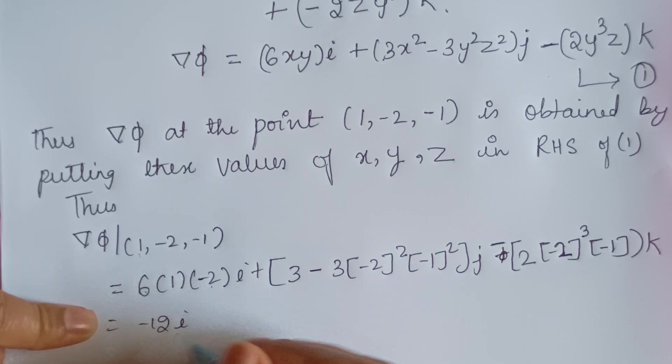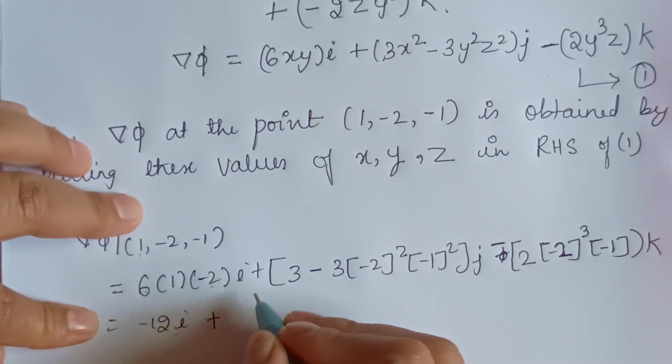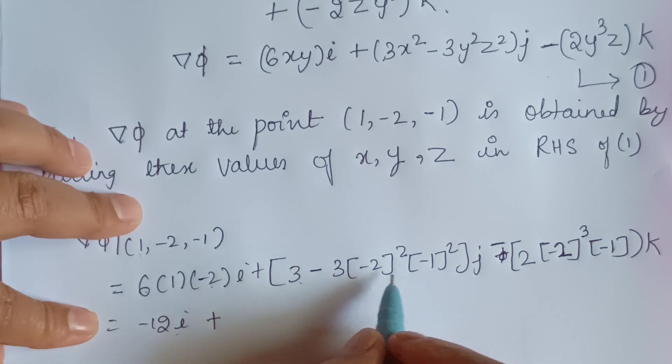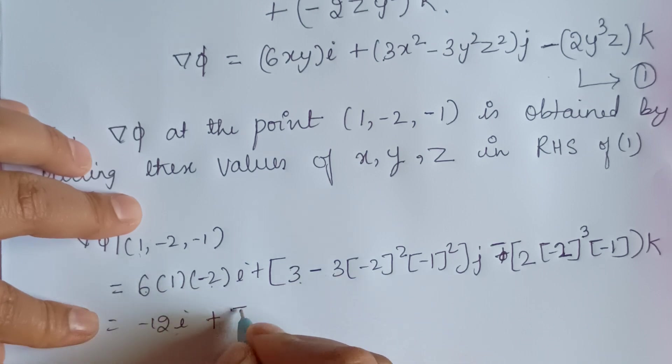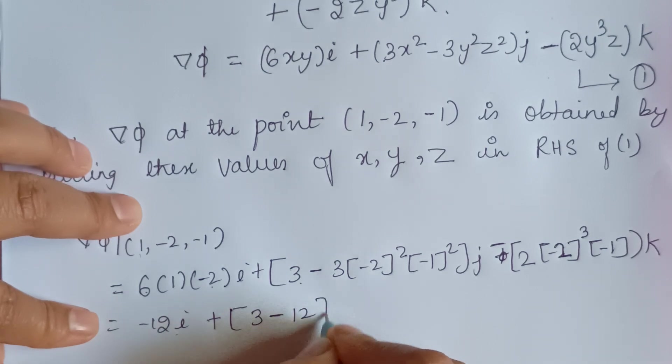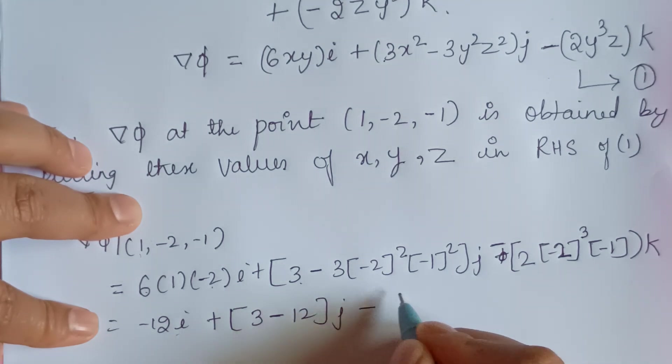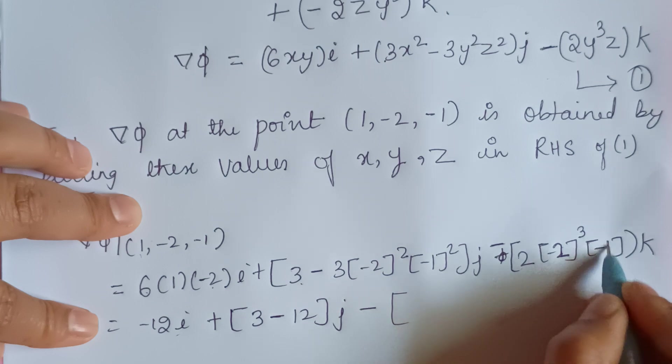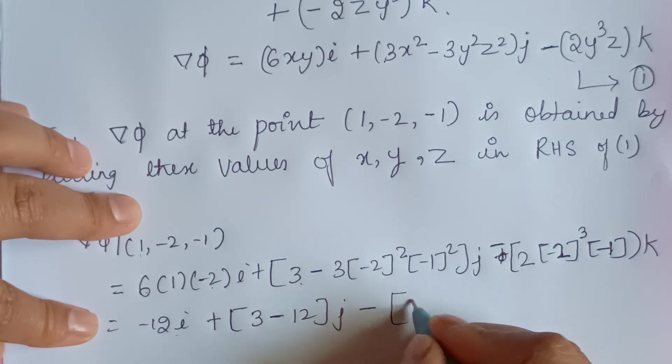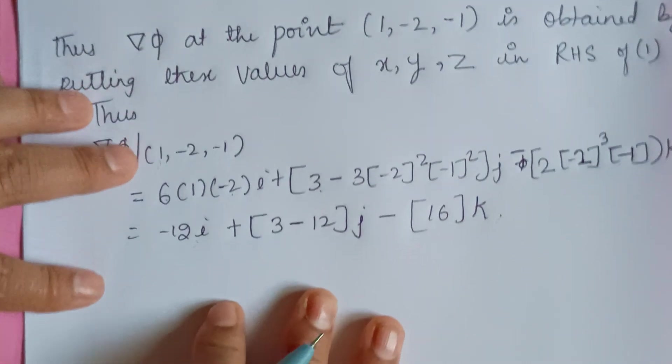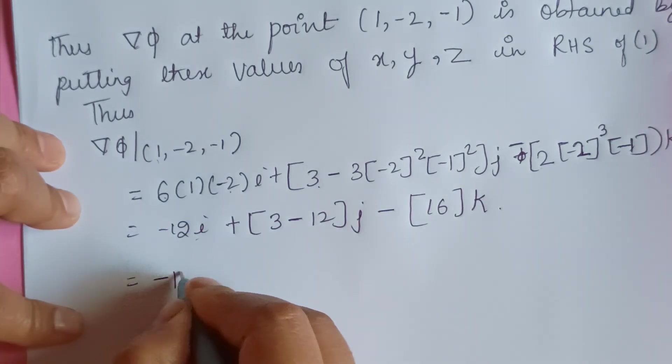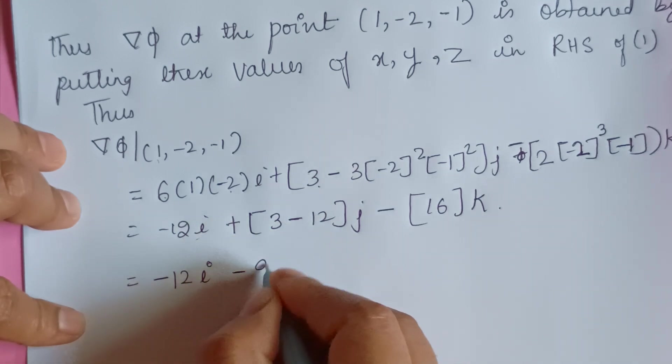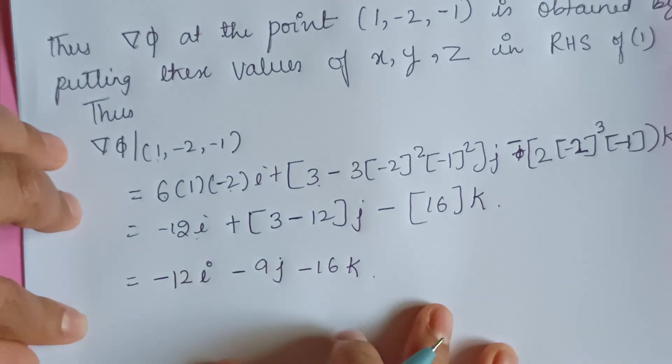Now minus 12i. This is minus 12i plus I can write this as 3 minus, 2 to the 4 is 4 × 3 is 12, so this is going to be 3 minus 12 j. Now here this is cube, so this is going to be minus 8. Minus 8 multiplied by minus 1 becomes plus 8, so 8 × 2 is 16. 16k. So if I just write it properly by removing all the brackets, it becomes minus 12i minus 9j minus 16k.